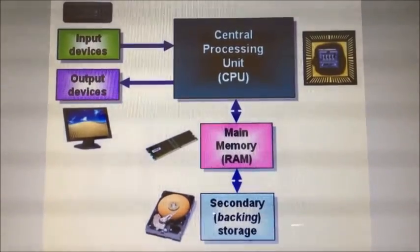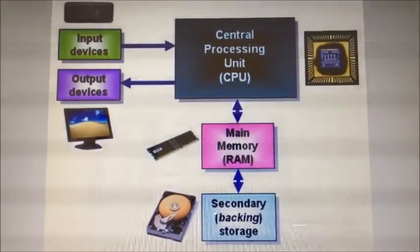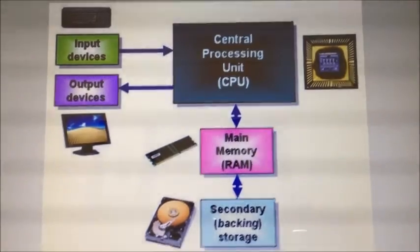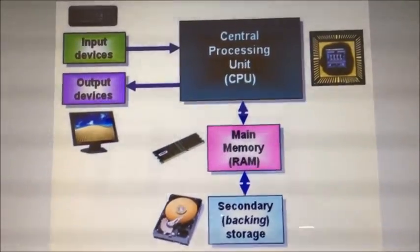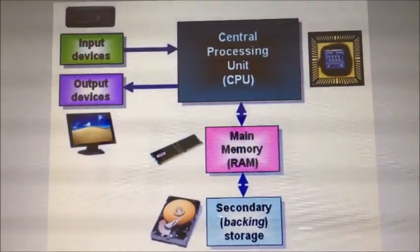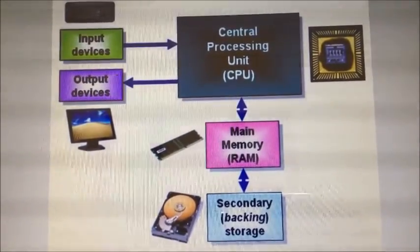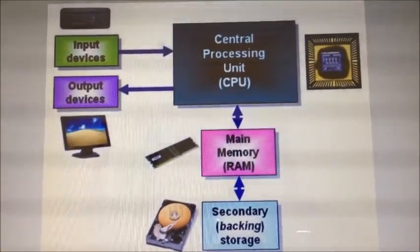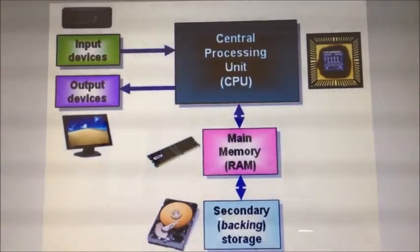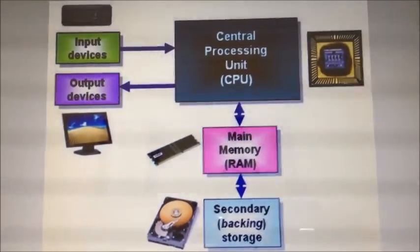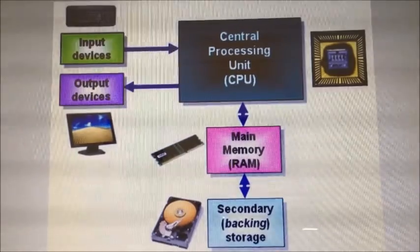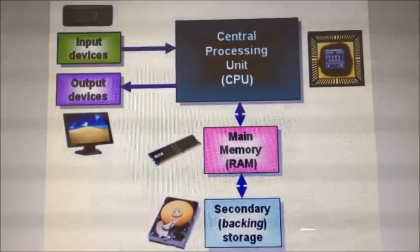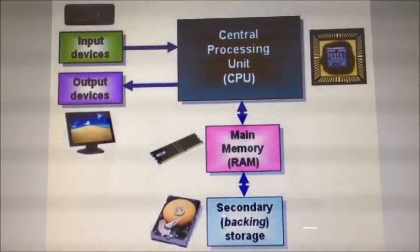Today we are going to speak about computer storage, in this case secondary storage. When a computer central processing unit or CPU processes bits of information, that information is held temporarily in the main memory. This is volatile, which means that information is lost once the power of the computer is turned off. A lot of information will be required to be kept permanently, and for this a different sort of storage, known as secondary or backing storage, is required.